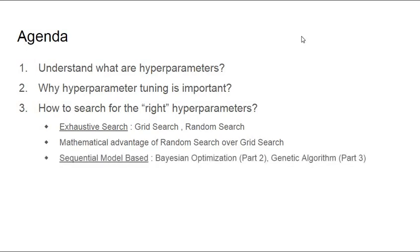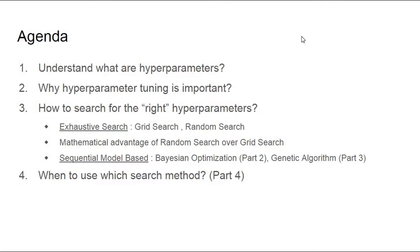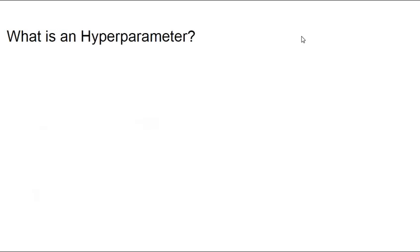One thing we'll definitely cover in this video is the mathematical advantages of random search over grid search, and we'll understand which method to use — whether it is grid search, random search, Bayesian optimization, or genetic algorithm. That has to be dependent on the scenario, so we're going to cover that along with a case study in part four. So let's get started.